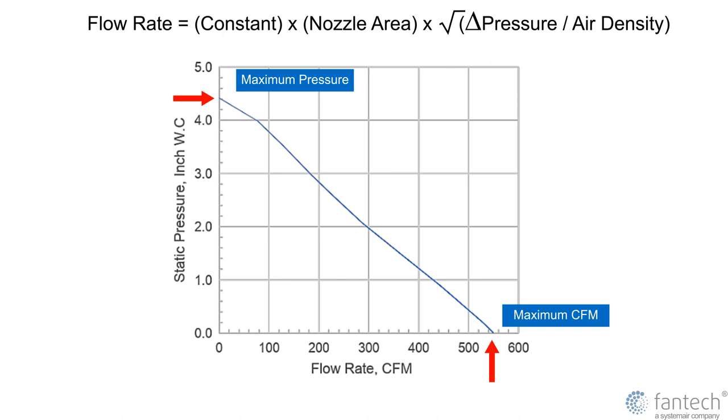Flow rate is at its maximum when fan inlet and outlet is totally open, and a fan is capable of producing maximum vacuum when its inlet is totally closed.